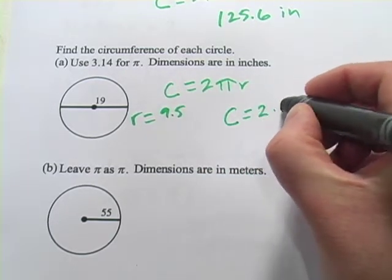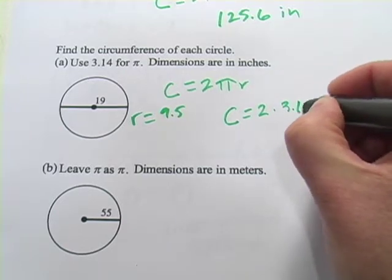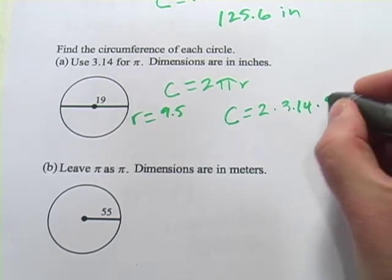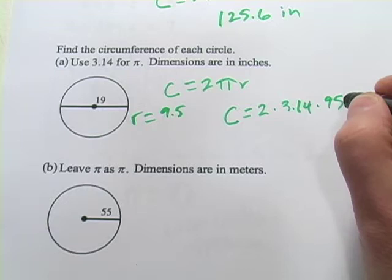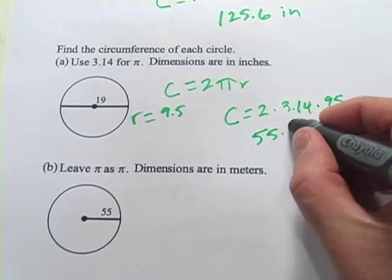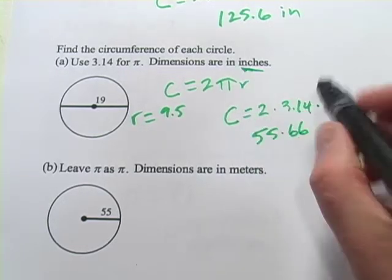Circumference equals 2 times, well, 3.14 they want us to use for π, and 9.5. And when you crunch the numbers on that, I think you're going to get 55.66, and this was in inches.